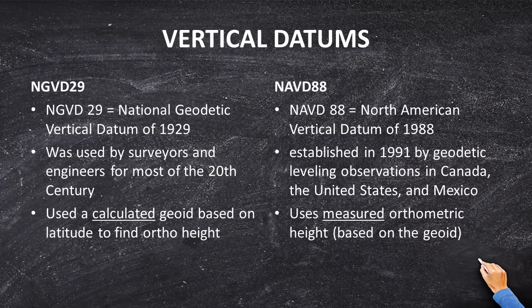We've got a couple of different versions of vertical and horizontal datums. For horizontal, those are NAD 27 and NAD 83 — the North American Datum of 1927 and the North American Datum of 1983. Here, however, we are not so concerned about horizontal but vertical datums. The two most prevalent vertical datums in this country are NGVD 29, the National Geodetic Vertical Datum of 1929, and NAVD 88, the North American Vertical Datum of 1988.